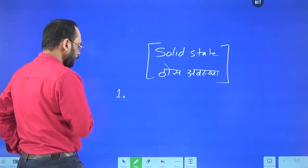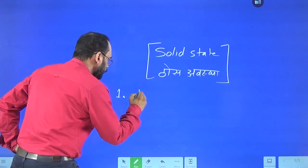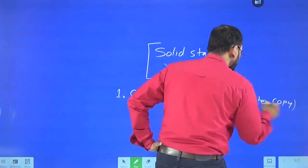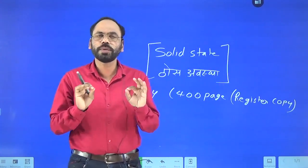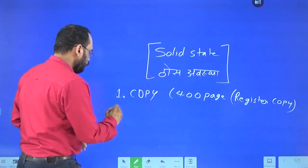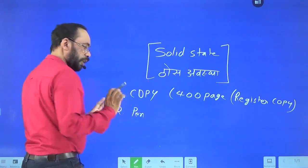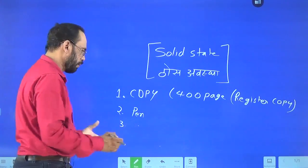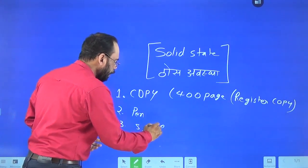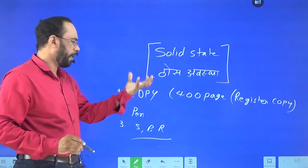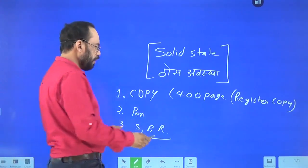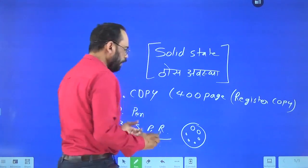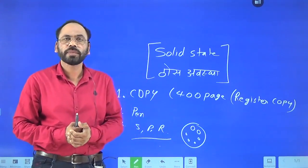You have to keep a 400-page registered copy. The second one will be a pen. The third one will be scale, pencil, and rubber. These three things you need. The other one will be stencils, which are called circular or rounder scales. Keep it.